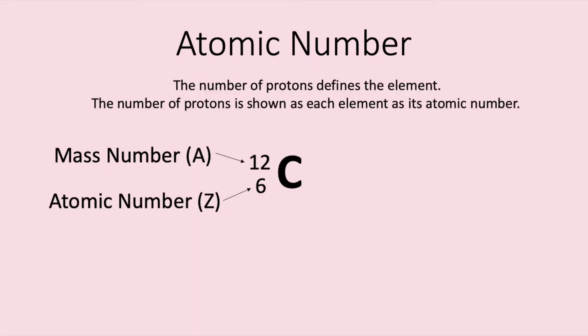Every atom of the same element contains the same number of protons. Different elements contain atoms that have different number of protons. The number of protons is shown as its atomic number. We can find this on the periodic table. Atomic number is often the bottom number shown on the periodic table. For example, for carbon it is 6. We can also represent the atomic number by the letter Z.